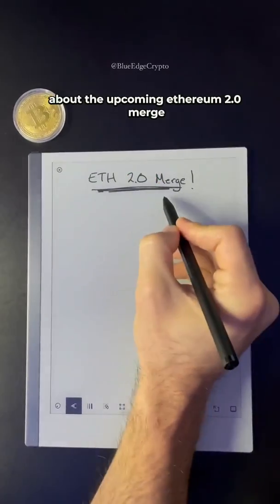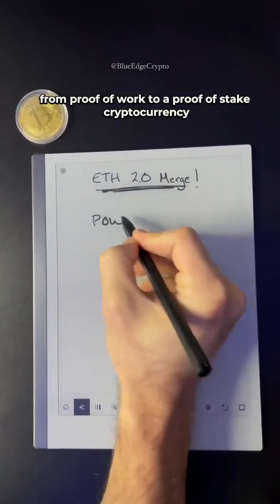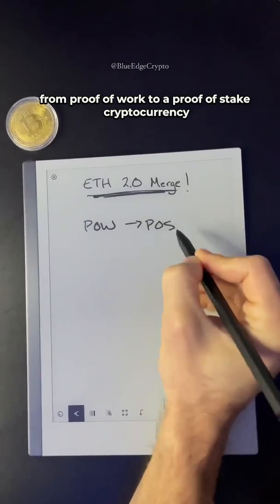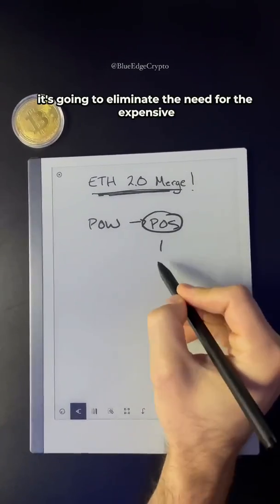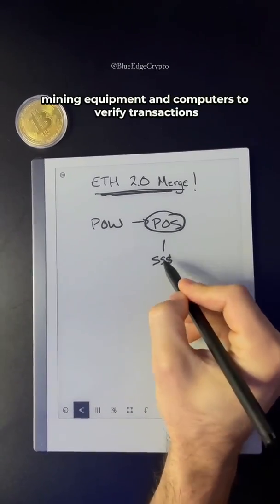Here's what you need to know about the upcoming Ethereum 2.0 merge. Ethereum will be switching from proof of work to a proof of stake cryptocurrency. When they do this, it's going to eliminate the need for expensive mining equipment and computers to verify transactions.